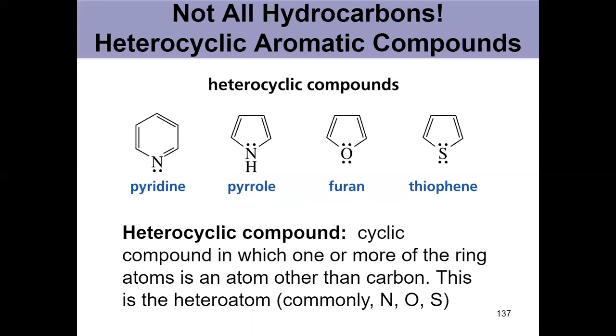But we've only looked at hydrocarbons so far, right? Things with carbon and hydrogen. Those aren't the only things that are aromatic. If you have something other than carbon in the ring, it's called a heterocycle or a heterocyclic compound. So that's something where you have substituted for carbon. Nitrogen, oxygen, or sulfur are the most common ones. These guys are aromatic as well.